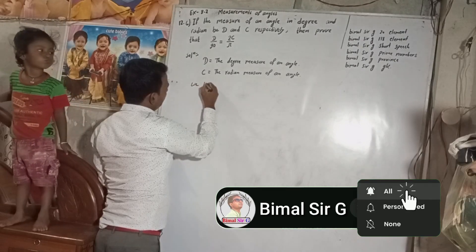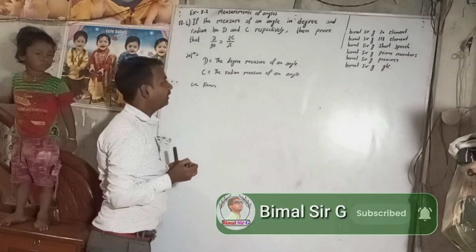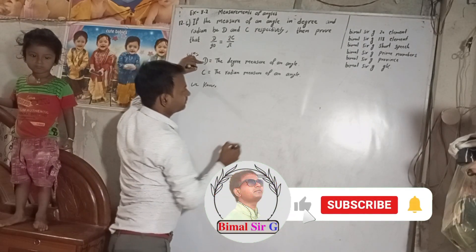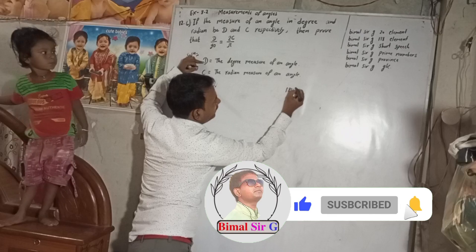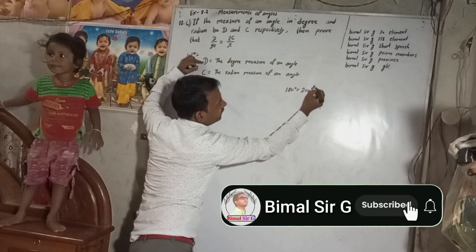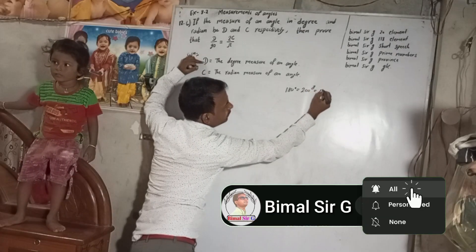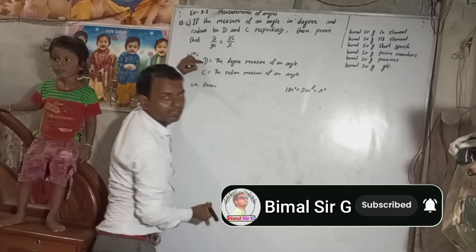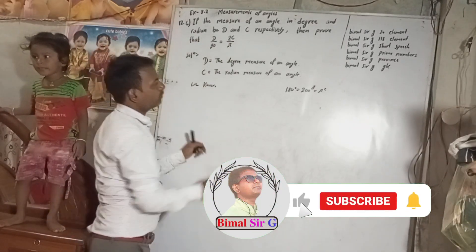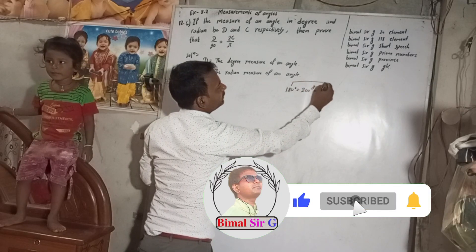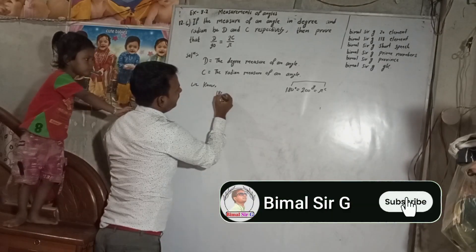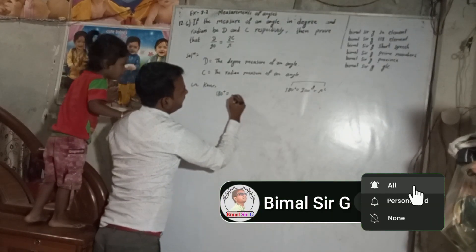Now we know — we have to remember the relation between degrees and radians. We know that 180 degrees is equal to Pi radian.